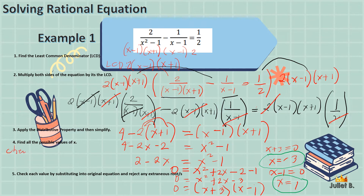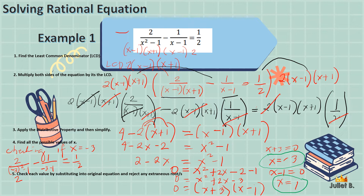Checking x equals negative 3 in the original equation: 2 over negative 3 squared minus 1, minus 1 over negative 3 minus 1, equals 1 half. We get 2 over 8, minus 1 over negative 4. That's 1 fourth plus 1 fourth equals 1 half, which is true. So we accept negative 3 as a solution.